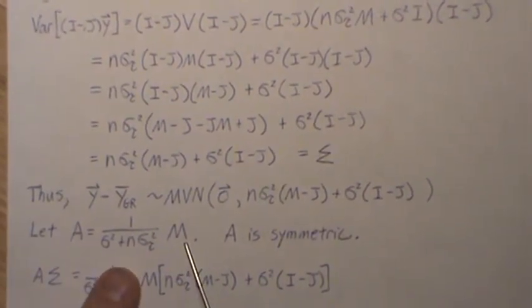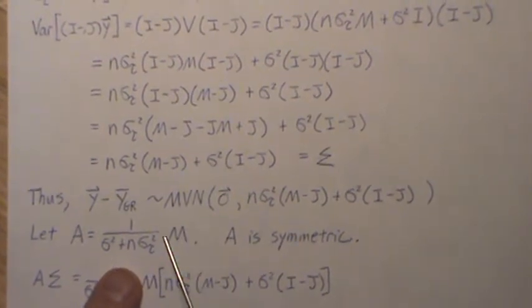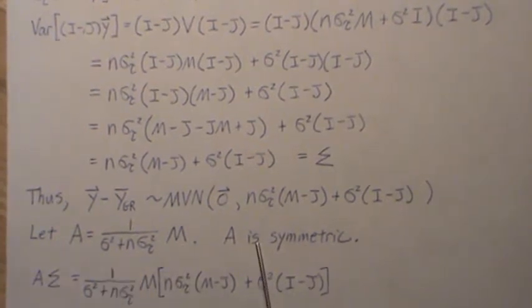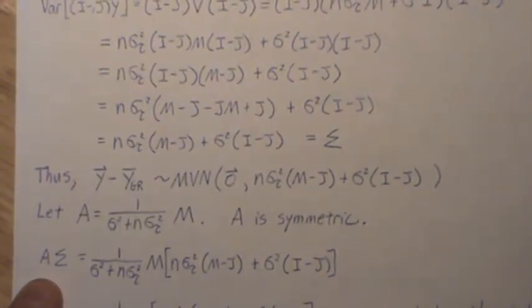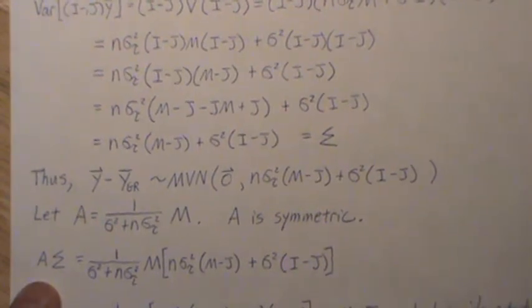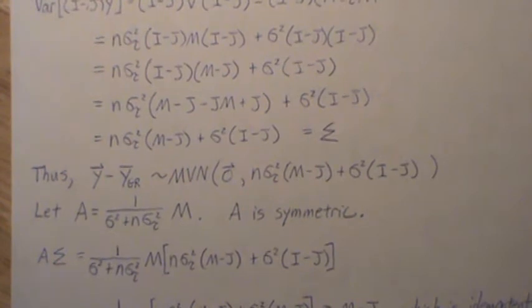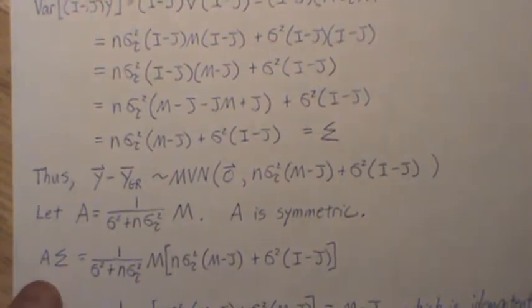Now let's let A be this. Now A is symmetric, because this is symmetric. M is symmetric. So A is symmetric. So now let's look at A times sigma. We're building up to one of the theorems in the quadratic forms distribution of quadratic forms playlist that I have.